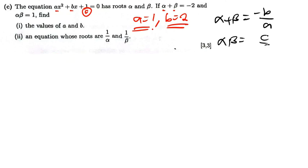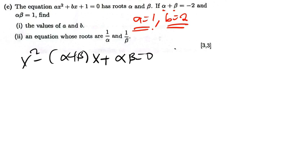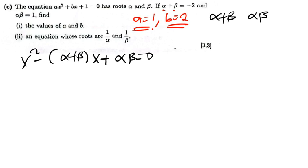Those are the values of a and b. Now for part 2, we need an equation whose roots are 1 over alpha and 1 over beta. The equation of the roots is given by x² minus (alpha plus beta)x plus alpha times beta equals 0. So we need to find the new sum and product of roots — that is, 1 over alpha plus 1 over beta, and 1 over alpha times 1 over beta.